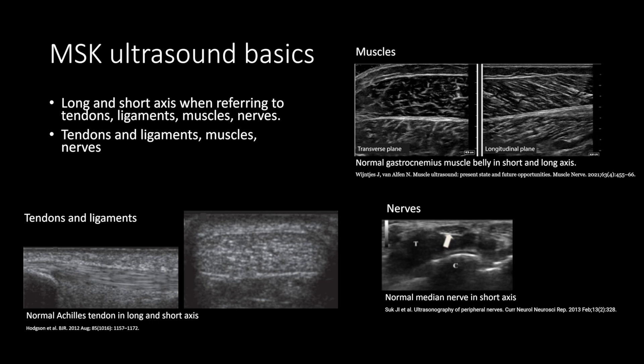On the bottom left, you can see an ultrasound of normal Achilles tendon in both long and short axis. As for muscles, on the top right, they're more hypoechoic with interspersed small echogenic lines reflecting the fiber adipose tissue. This is a short and long axis view of the gastrocnemius muscle. On the bottom right, we can see a median nerve. Nerves have more of a fasciculated appearance, sometimes described as honeycombing. The nerves themselves are dark with low echogenicity, with surrounding epi- and perineurium that's bright and contains fatty tissue.